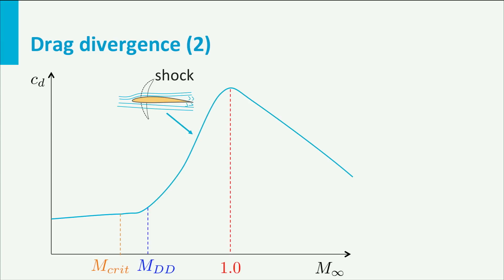This rapid drag rise due to the forming of shocks was the reason that initially people thought there was no end to this drag rise, and they called it the sound barrier. However, as you can see in this picture, when the flow over the airfoil is entirely supersonic, the drag reduces again due to a combination of shock and expansion waves.